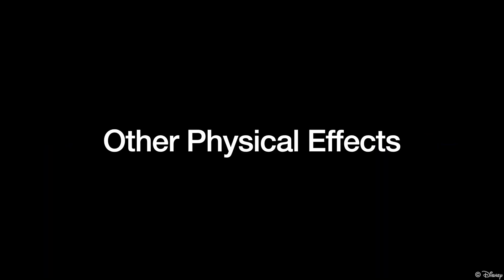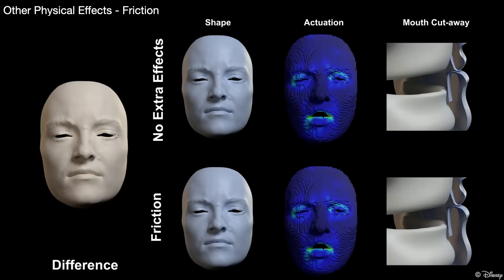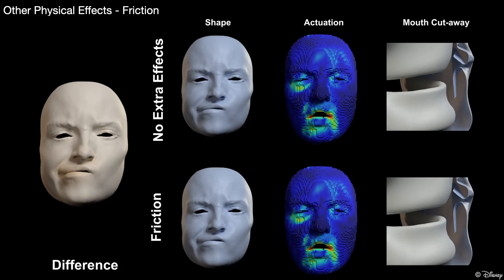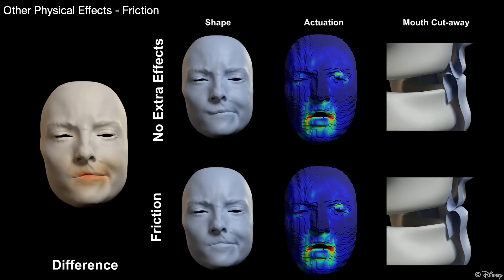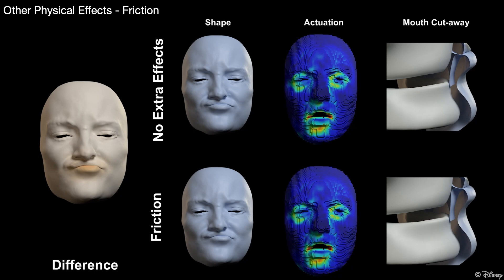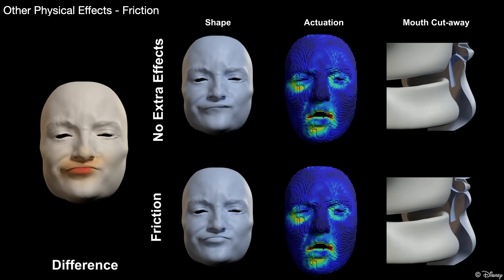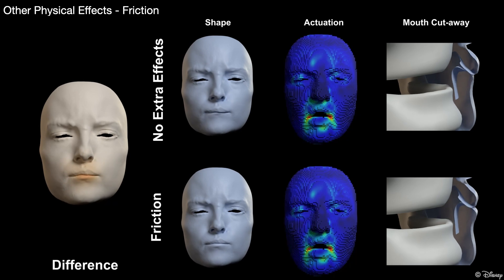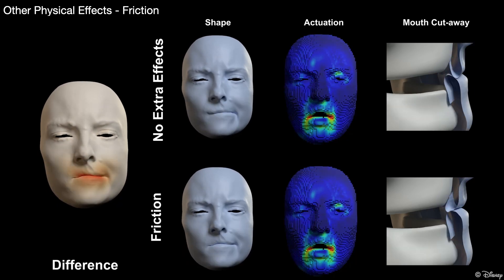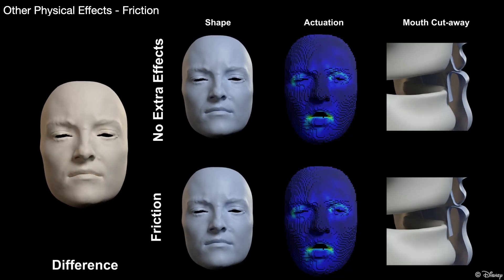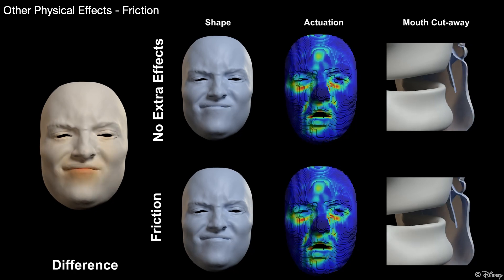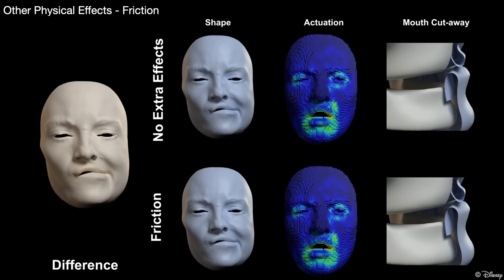As a physics-based model, it can support various physical effects. Our versatile collision model can synthesize friction effects during inference time. Without friction, the lower lip slips inside the upper lip and then suddenly pops out, which is not very natural. When we include friction, the movement of the lower lip becomes much more consistent with the upper lip, bringing much more realism to our simulation.